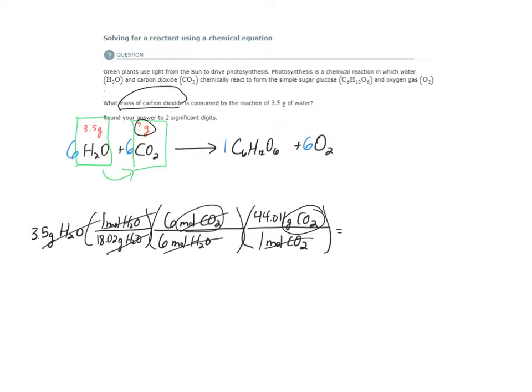So let's do the math. 3.5 times 1 over 18.02, close parentheses. 6 divided by 6, close. Open. 44.011 over 1. I get 8.548196 grams of CO2.